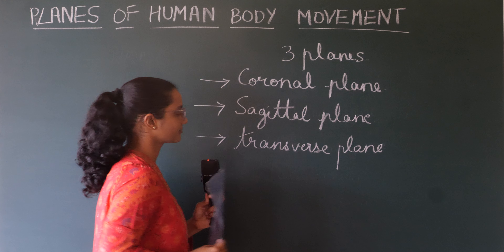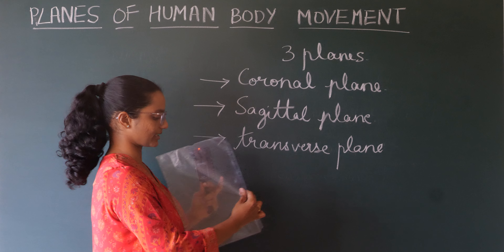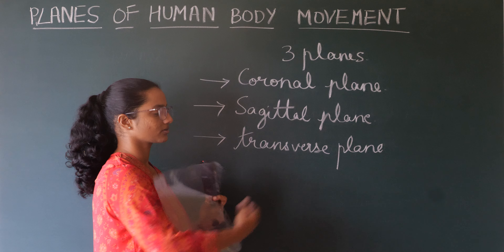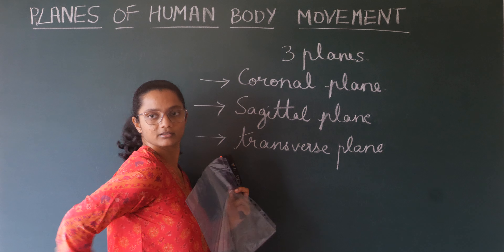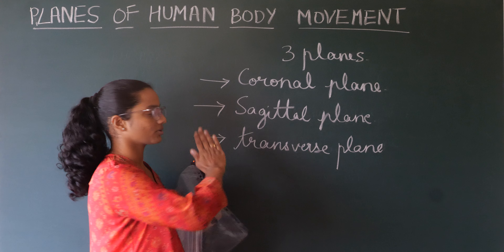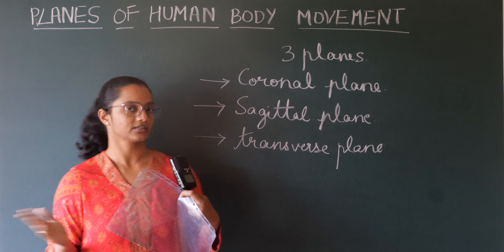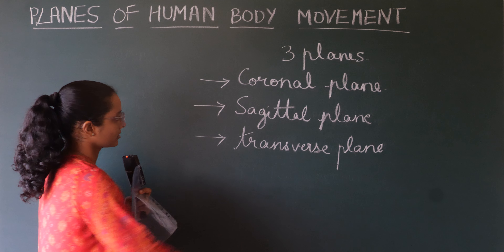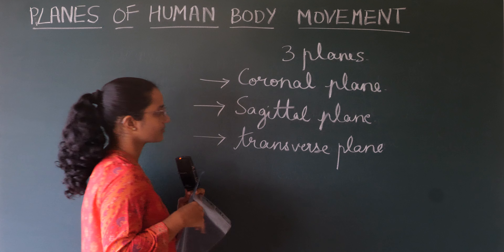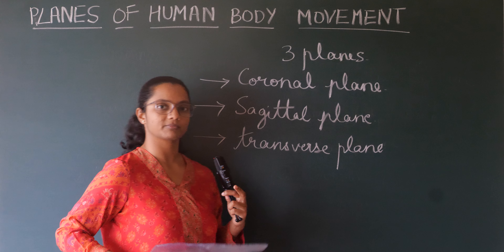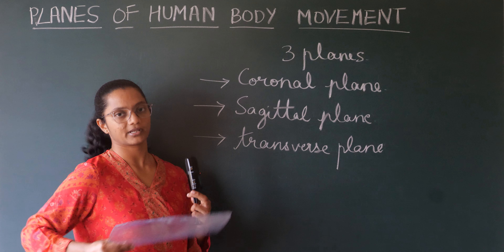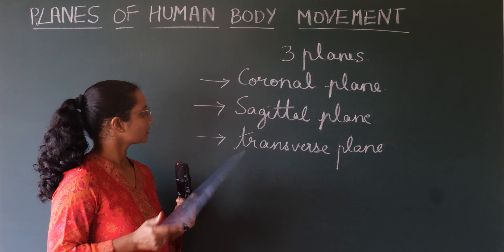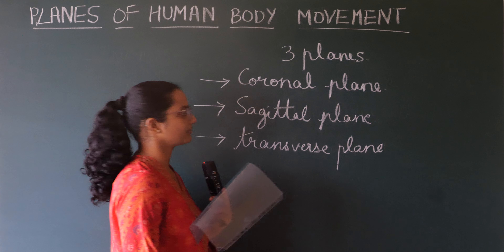If this plane cuts my body from the front through to behind into two halves — left and right side — then it is known as the sagittal plane. The transverse plane is when this plane cuts my body into two halves that are top and bottom. This is known as the transverse or horizontal plane.